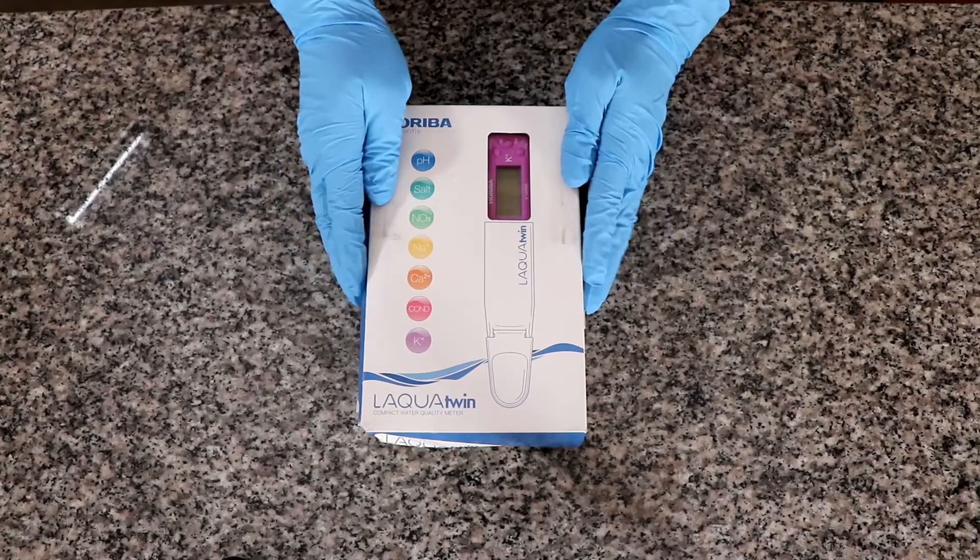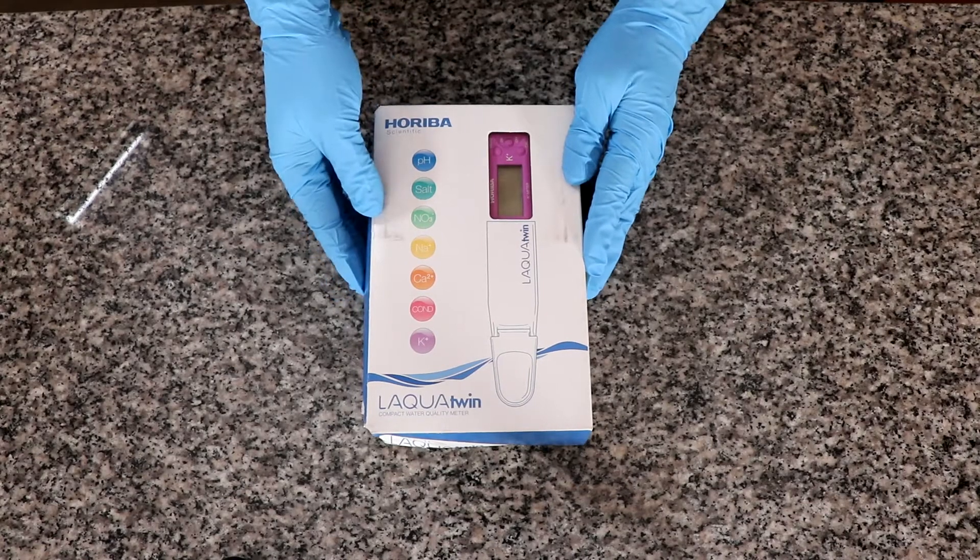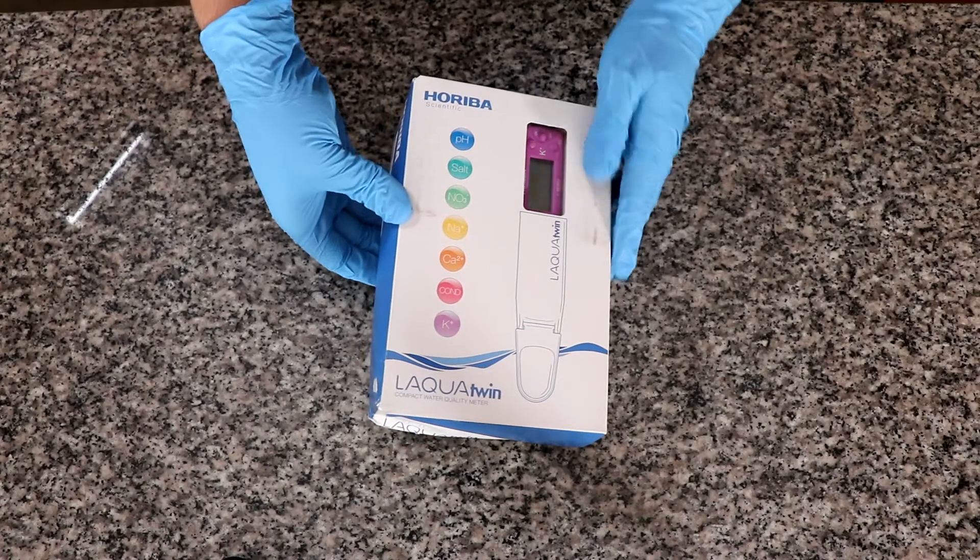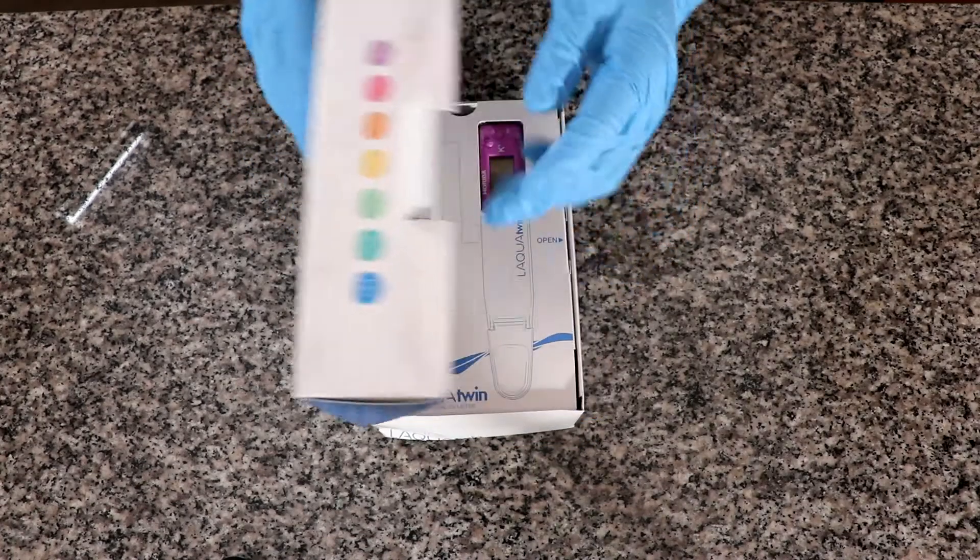The objective of this ion selective electrode is to allow us to measure potassium in a hydroponic solution or in any solution within a certain concentration range. So let's unbox this and see what we are getting.